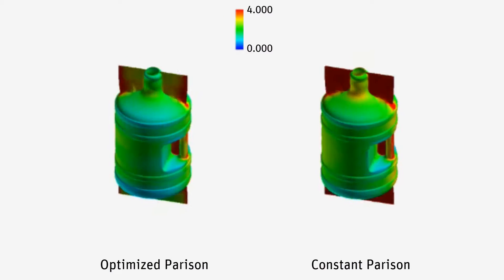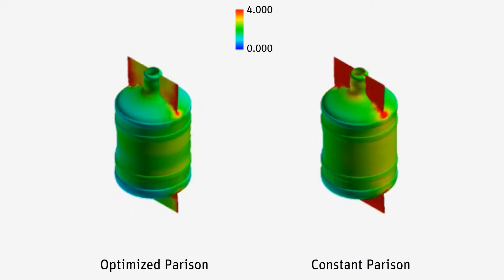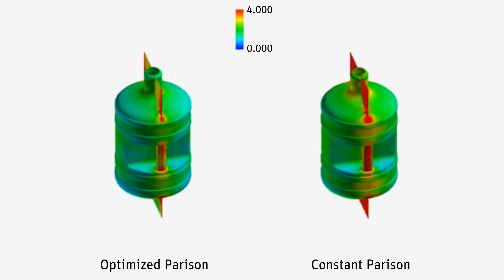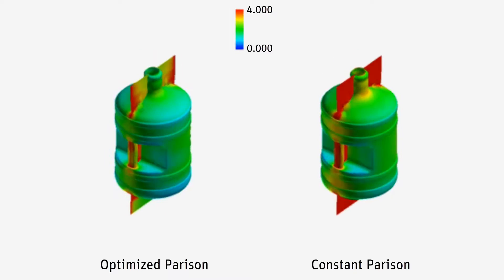While the flash may have changed, it's clear that elsewhere the optimized design has a material distribution that's very similar to the original design. This means that the strength of the optimized part was not affected by the reduction of the parison material.